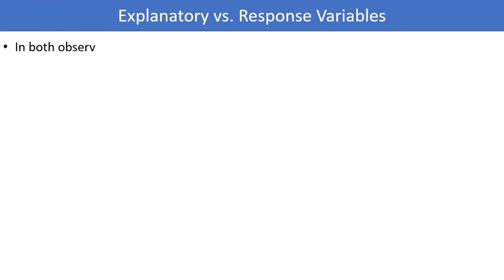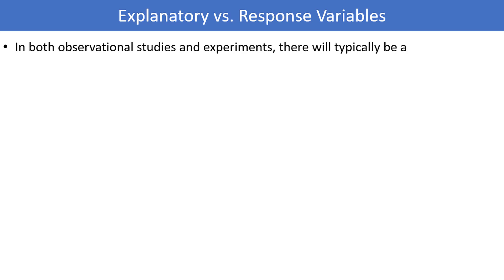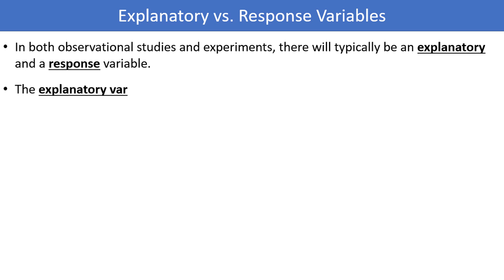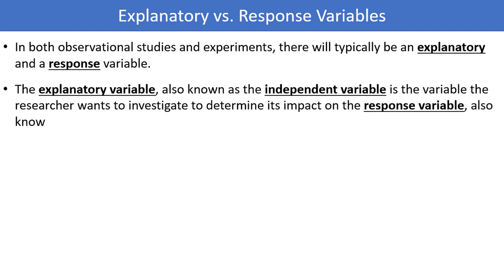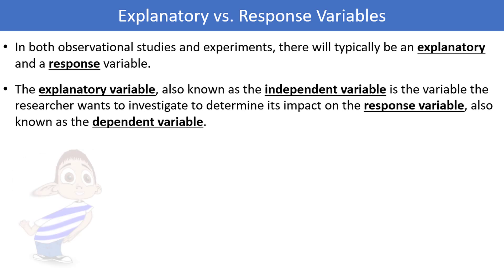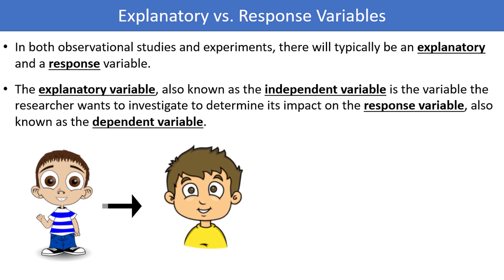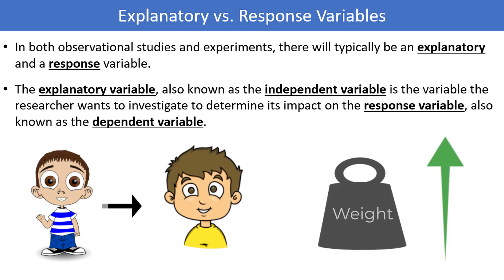In both observational studies and experiments, and in a variety of other contexts within statistics, there will be what are called explanatory and response variables. The explanatory variable, also known as the independent variable, is the variable the researcher wants to investigate to determine its impact on the response variable, oftentimes called the dependent variable. An example might include the age and weight of a child in pounds. The explanatory variable is age, and the response variable is weight.